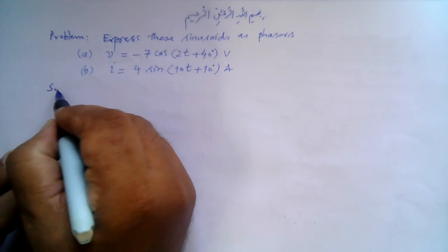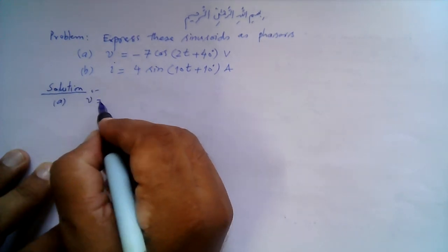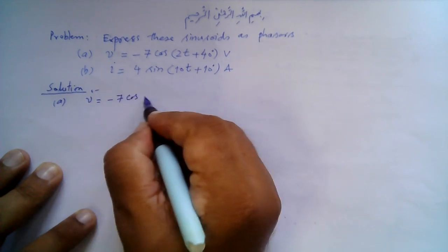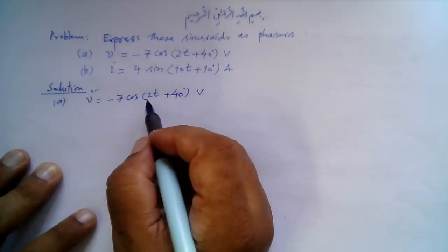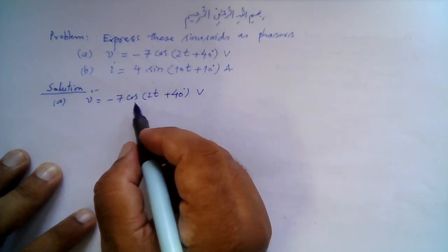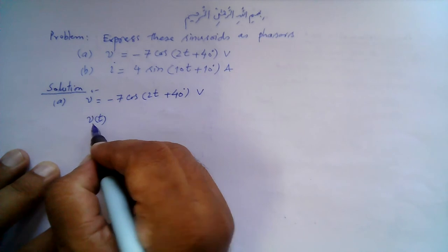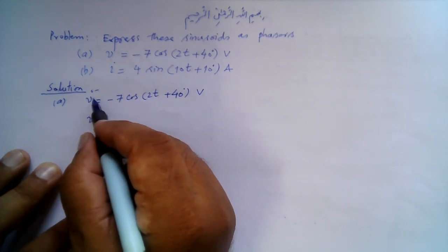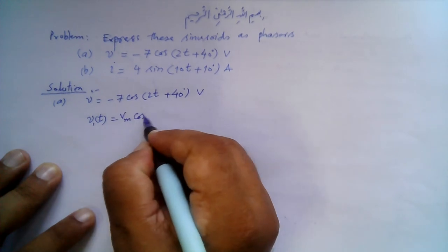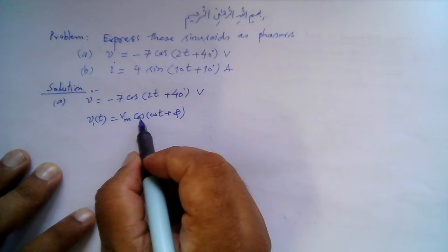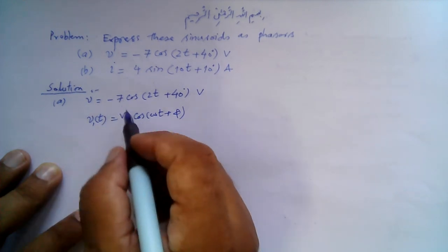Let's begin Part A. The given sinusoid is v = −7 cos(2t + 40°) volts. We must first transform it to the standard form. This is a minus cosine function and we should transform it into a positive cosine function. The standard form is v₁(t) = Vm cos(ωt + φ). But here we have −7, so we must first transform it to the positive cosine function.